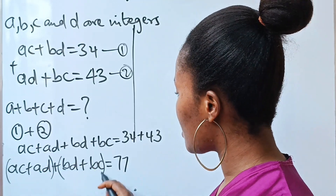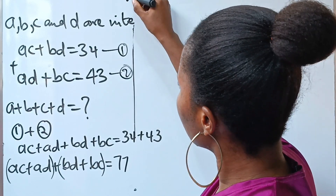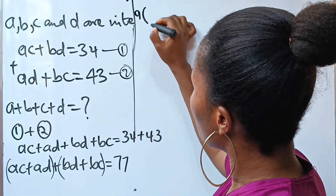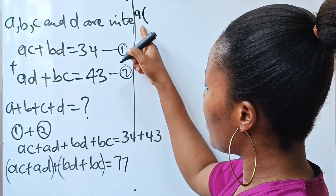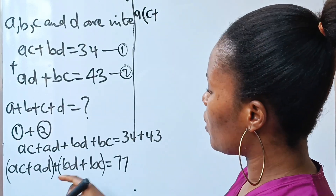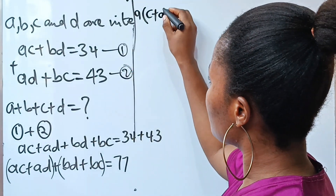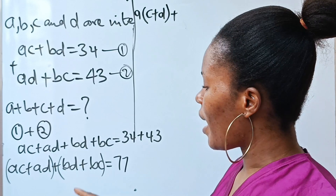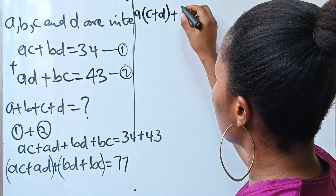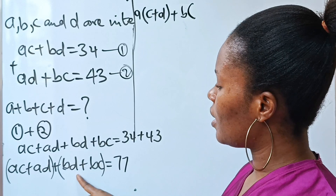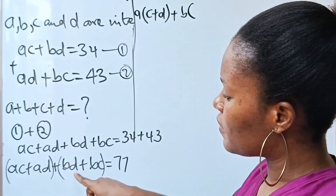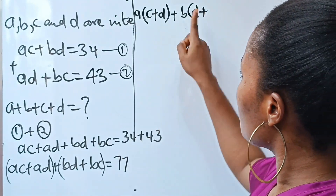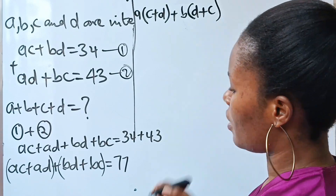Now let's factorize by grouping. Grouping ac + ad together, a is common, so we factor out a to get a(c + d). Then grouping bd + bc together, b is common, so we factor out b to get b(d + c).